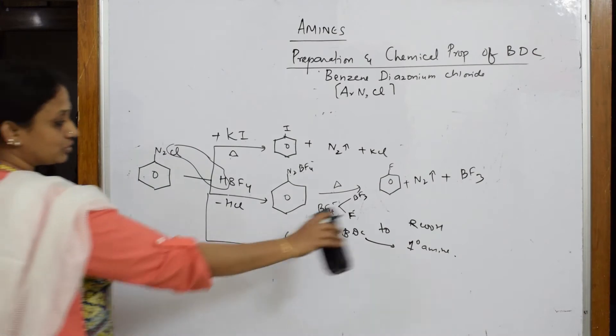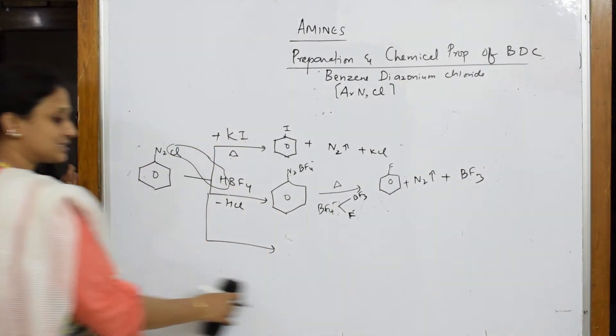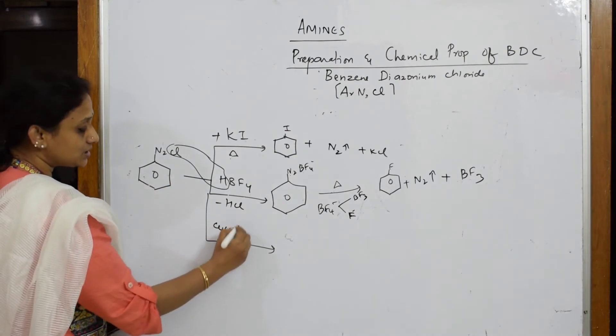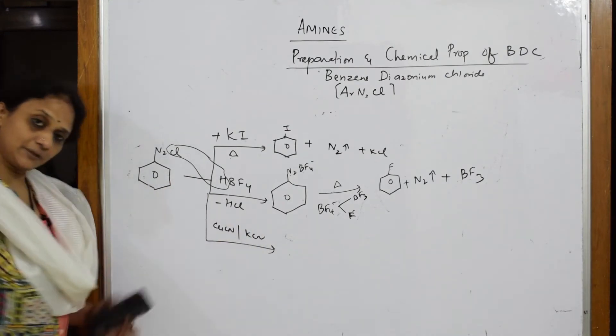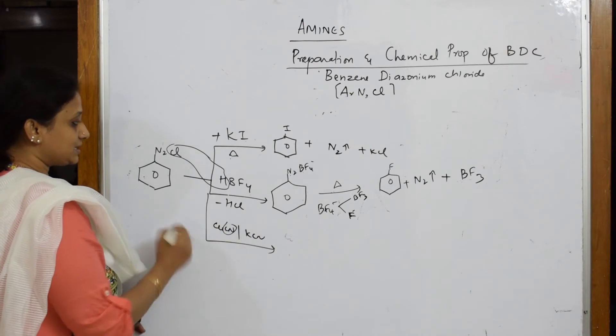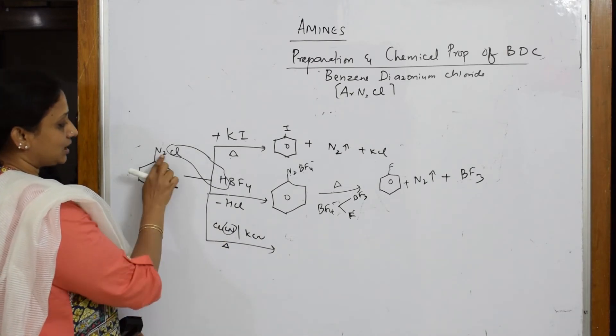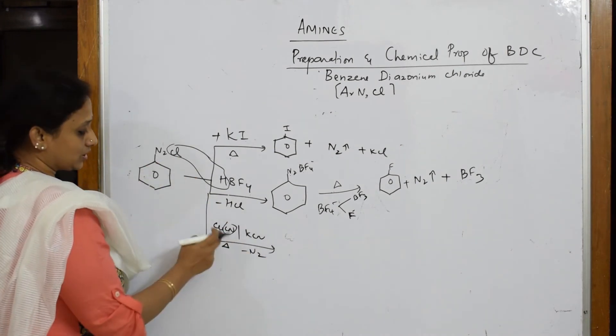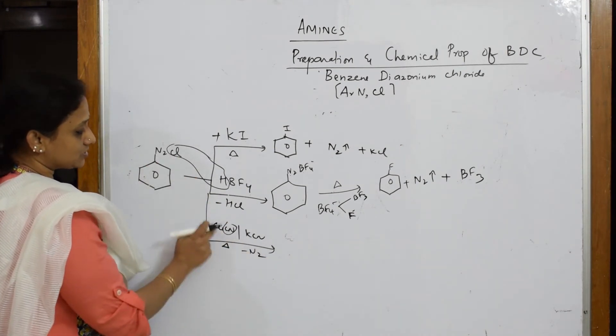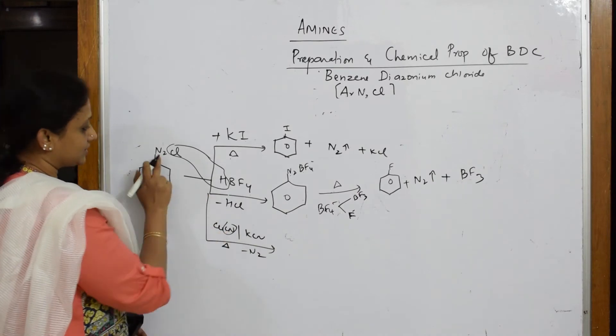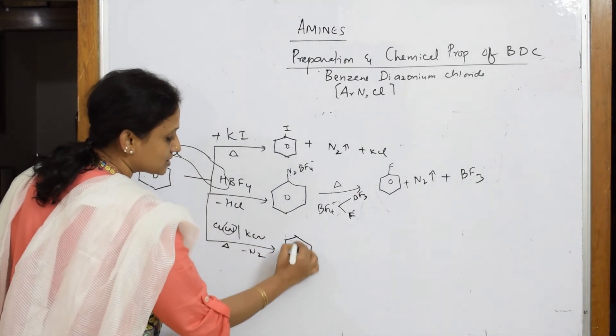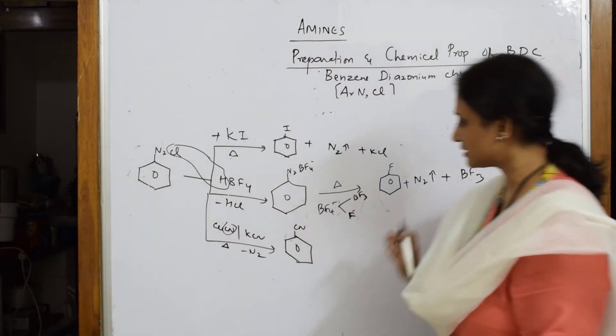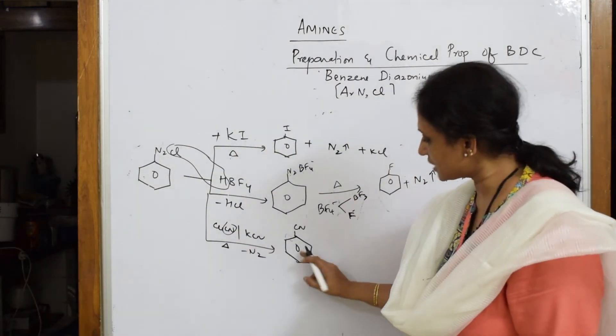Convert BDC to RCOOH. Or convert BDC to primary amine. This is a big confusion. How should I do this? Simple thing. Both the questions I can answer like this. You want to take BDC, introduce CuCN or KCN. This is your nucleophile CN. As soon as you heat it, nitrogen gas escapes out. Chlorine comes out as copper chloride. The leftover is CN which is attacking. So I am going to get CN.